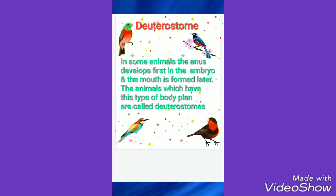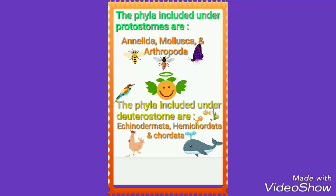Whereas in some animals, the anus develops first in the embryo and the mouth is formed later. The animals which have this type of body plan are called deuterostomes. The phyla included under the protostomes are the annelids, mollusks, and the arthropoda.